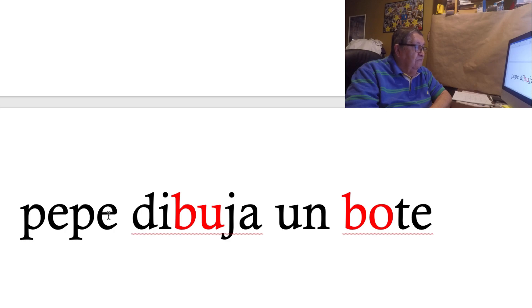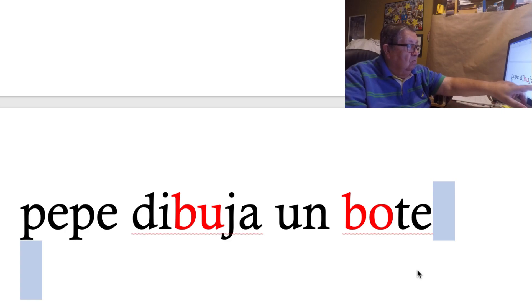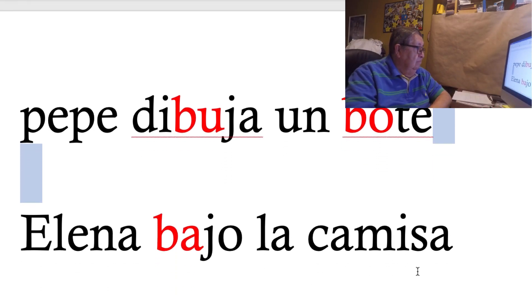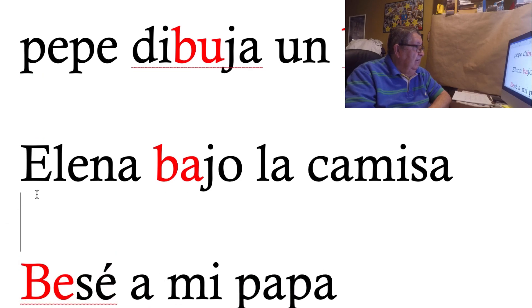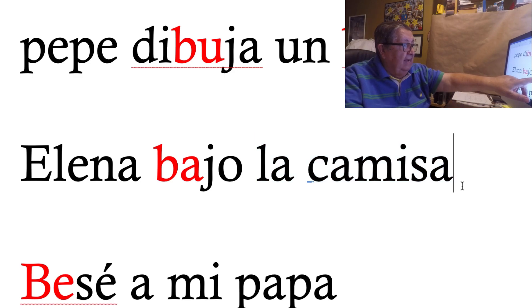Una frase completa aquí. Pepe dibuja un bote. Esto es Elena, es un nombre de una mujer. Elena bajó la camisa.